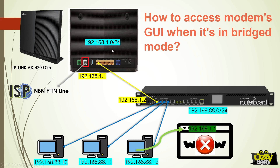When the modem is in bridge mode, DHCP is still enabled on it, so when I plug in the connection between the modem and the router, the router should be able to get an IP address from the pool. In my case, I statically assigned 192.168.1.2. My inside network is 192.168.88.0/24, with computers connected on the 88.0 network.